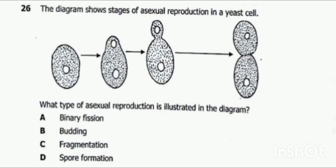Remember what we said — what is budding? Budding is a type of asexual reproduction where a parent cell or body of an organism develops an outgrowth which we call a bud, which increases in size and eventually detaches itself from the parent and becomes an independent organism.